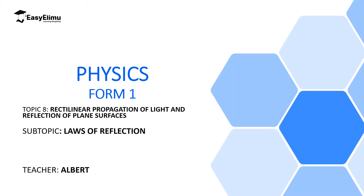Welcome to ECLIMU Learning Simplified and welcome to this lesson. In the previous lesson we discussed reflection and we defined it as the bouncing off of light when it hits a reflecting surface. Then we said all materials reflect light except the luminous materials.